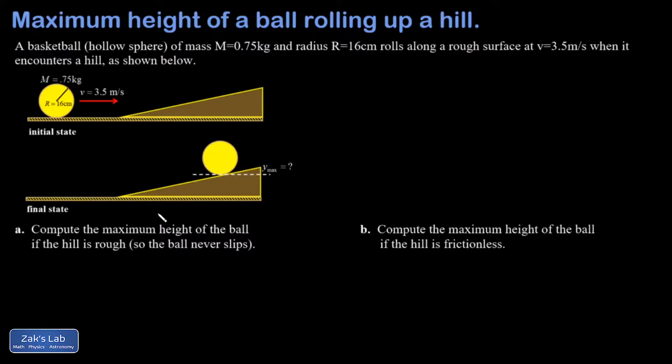In this problem we have a hollow sphere, a basketball, rolling along the ground without slipping. It runs into a hill and starts to roll up the hill, and of course it slows down as it rolls up the hill because its energy is being converted into gravitational potential energy.